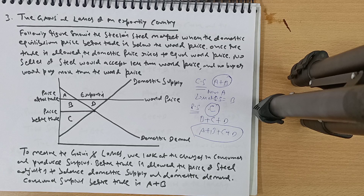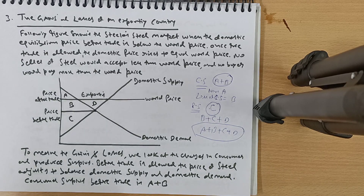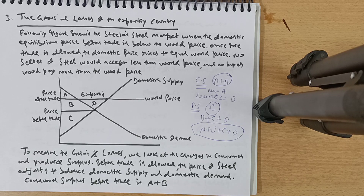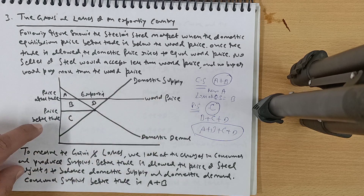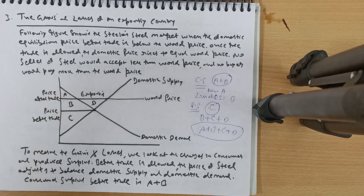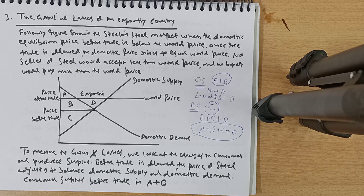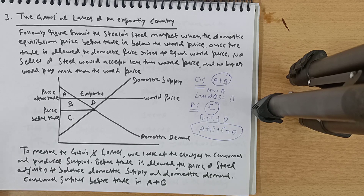Now let's look at the gains and losses of an exporting country. The following figure shows the Steelo steel market when the domestic equilibrium price before trade is below the world price. We assume the domestic price was 8 rupees and the world price is 10 rupees. Once free trade is allowed, the domestic price rises to equal the world price — no seller would accept less than the world price and no buyer would pay more.